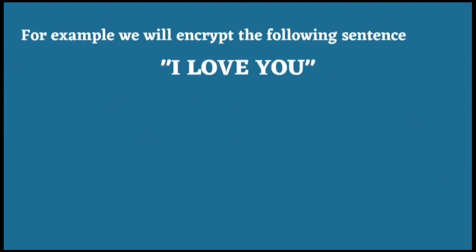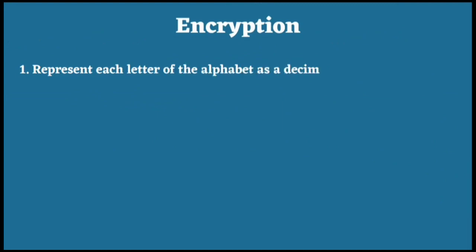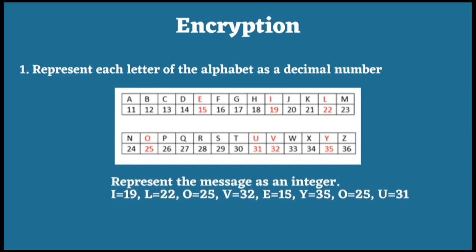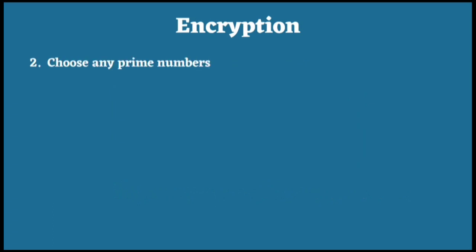For example, we will encrypt the phrase 'I love you.' In the first step, we represent the letters of the alphabet into positive integers. You can freely choose any digit number to represent these letters. Here, I represented the letters as two-digit decimal numbers, starting from A as the number 11, B as the number 12, and so on. So each letter in the sentence 'I love you' can be represented like this. In the second step, we select any prime numbers P and Q, where P is not equal to Q. In choosing P and Q, it is advisable to take large primes. This is intended so that data security can be tighter. However, since this is just an example, I take small P and Q values.